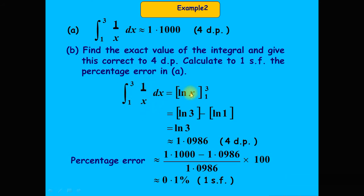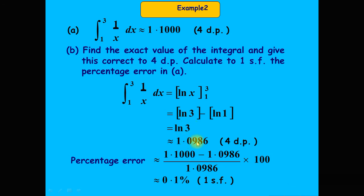The exact integration evaluates as [ln x] from 1 to 3 = ln(3) − ln(1) = ln(3) − 0 = ln(3). The value of ln(3) = 1.0986, correct to four decimal places.